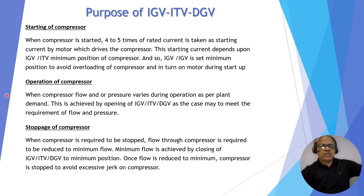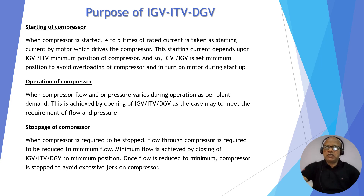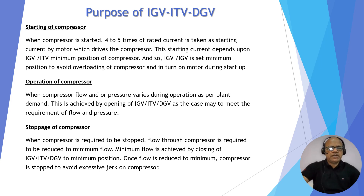Second is operation of the compressor. When the compressor is designed to operate at different flow conditions and different pressure conditions as per the operation requirement, this is achieved by opening of IGV, ITV, or DGV, or even anti-surge control. So these are the requirements for which IGV, ITV, and DGV are required.